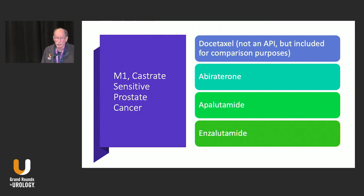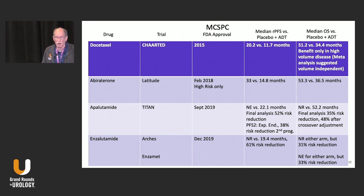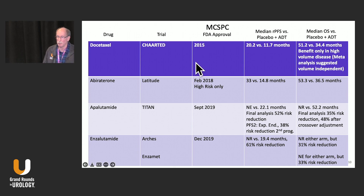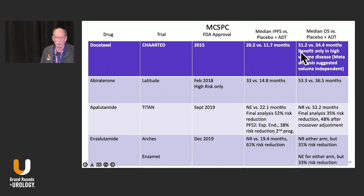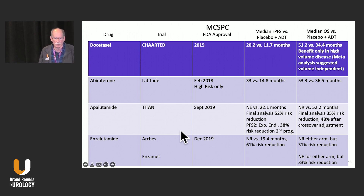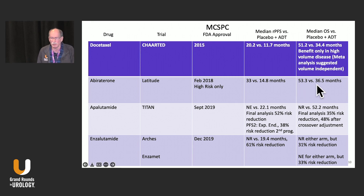In the M1 castrate-sensitive group, these are our choices. I include docetaxel for comparison purposes even though it's not an androgen pathway inhibitor. The CHAARTED trial from 2015 was the first indication and got a lot of attention — using docetaxel in combination with ADT in metastatic castrate-sensitive patients, especially high volume, showing quite beneficial median overall survival. Abiraterone also showed meaningful benefit with a 53 versus 36 month median overall survival advantage.